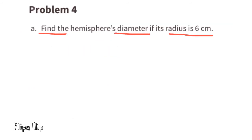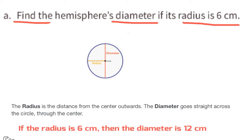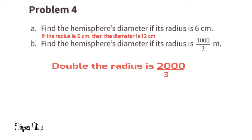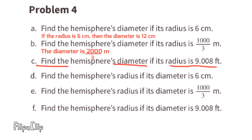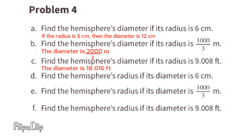Problem number four. Part a: find the hemisphere's diameter if its radius is 6 centimeters. The diameter is twice the radius, so the diameter is 12 centimeters. Part b: find the diameter if the radius is 1000/3 meters. Double the radius: the diameter is 2000/3 meters. Part c: find the diameter if the radius is 9.008 feet. Two times 9.008 equals 18.016 feet, so the diameter is 18.016 feet.